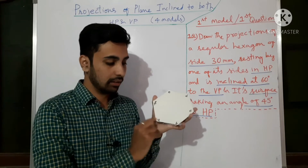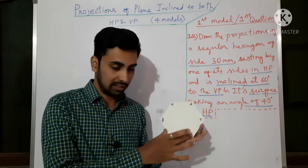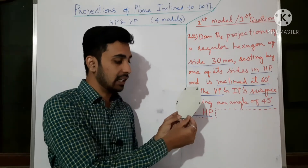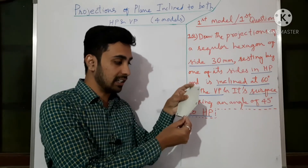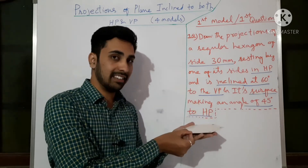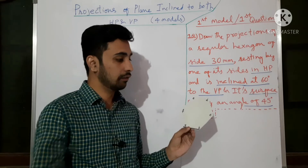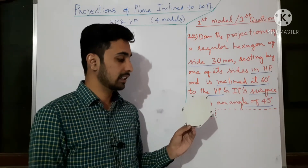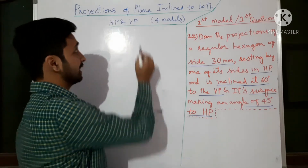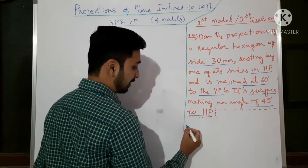Let's combine the question: the edge is resting in HP; this edge with respect to VP is making 60 degrees; the surface of the hexagon is now making 45 degrees to the HP — not parallel or perpendicular. As per the question, the surface is at 45 degrees. This is the final position of the hexagon. If you see the front view, this is the thing. Now let us see how to draw this.